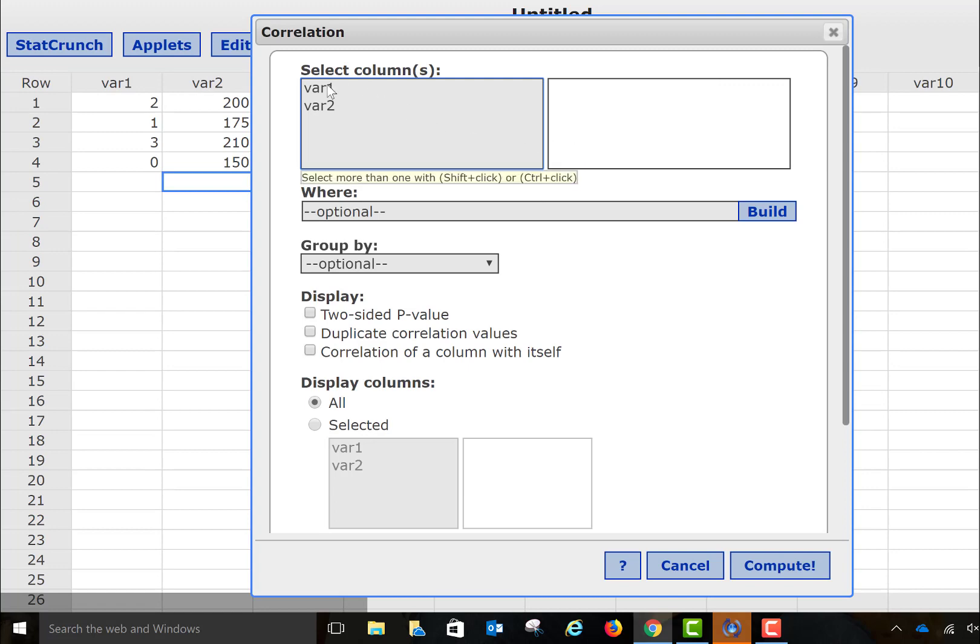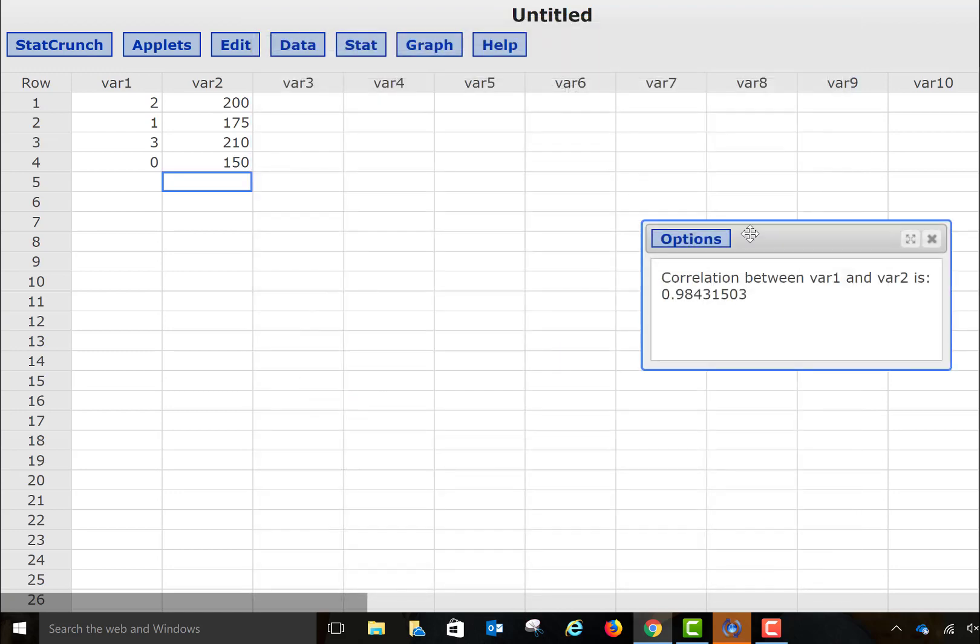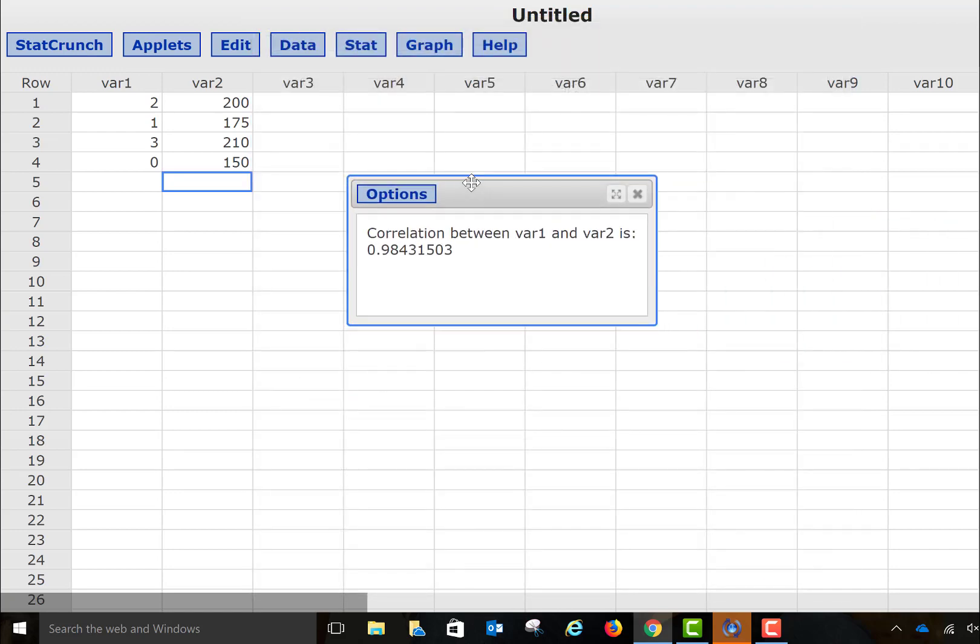Now, I have to select both my X and my Y values here, so I need to either hold the Shift button or the Control button down in order to get both of those columns selected, and then when I come down here and select Compute, you can see again,